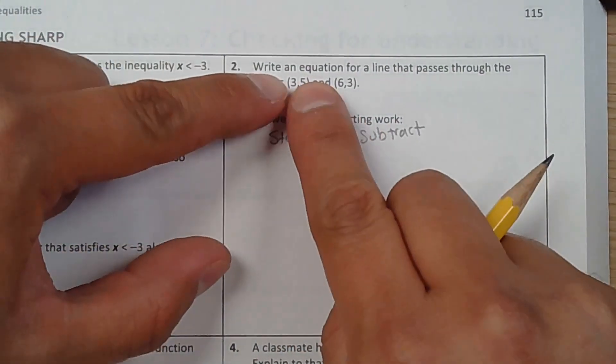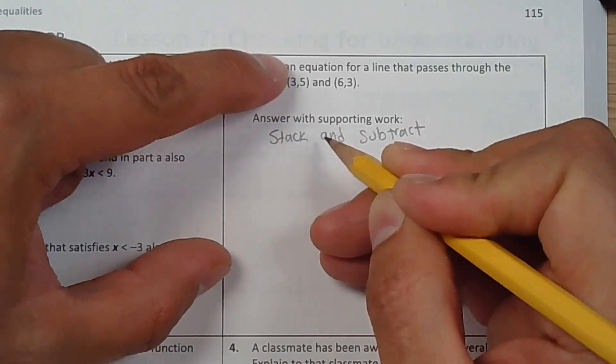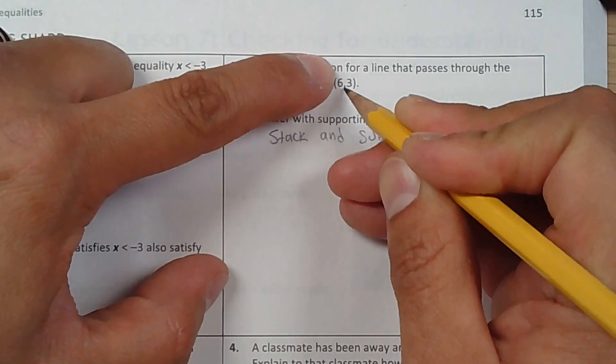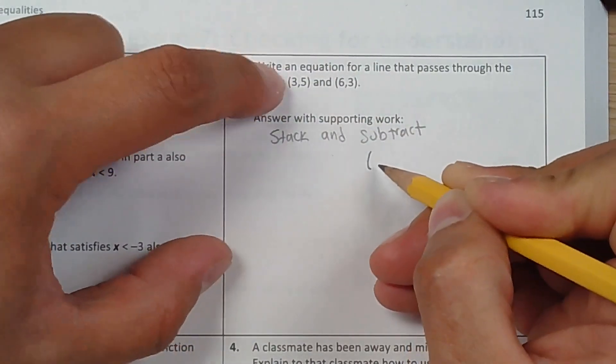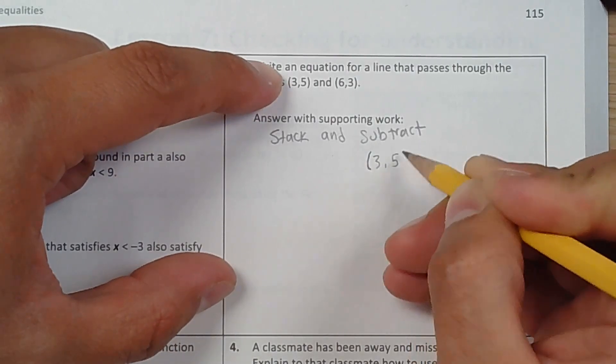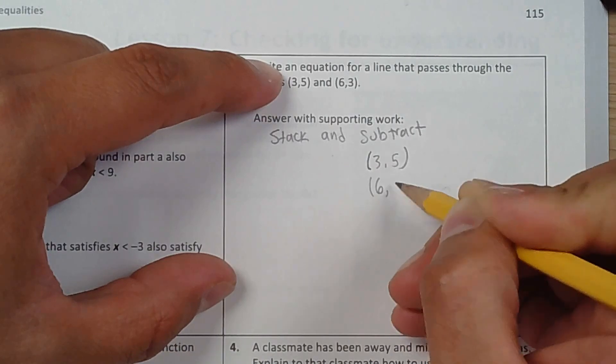So for this method, all you have to do is line them up accordingly and stack them up and subtract them. So I'm going to put (6,3), or it doesn't matter which one you put. I'll put this one (3,5) and (6,3).